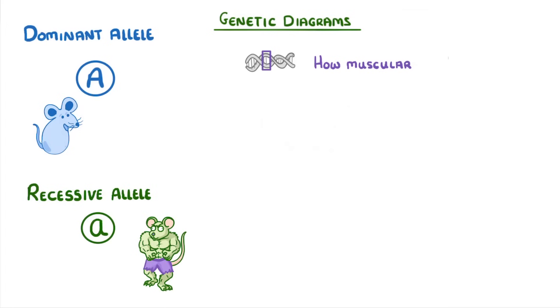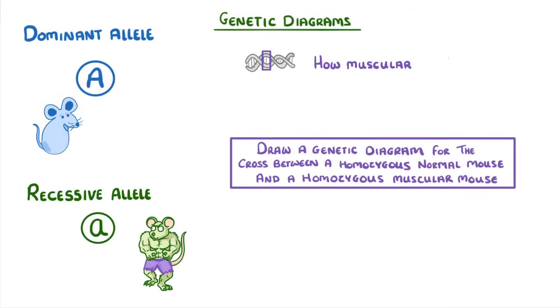A typical question for this topic could be something like draw a genetic diagram for the cross between a homozygous normal mouse and a homozygous muscular mouse.